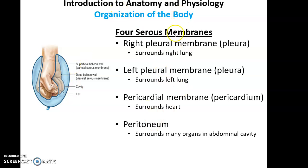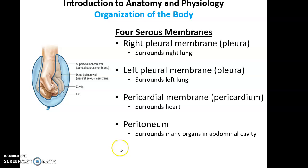Here are the four serous membranes: the right pleural membrane, or pleura, surrounds the right lung; the left pleural membrane, or pleura, surrounds the left lung; the pericardial membrane, or pericardium, surrounds the heart; and the peritoneum, which surrounds many organs in the abdominal cavity. That is it for this part of Chapter 1.